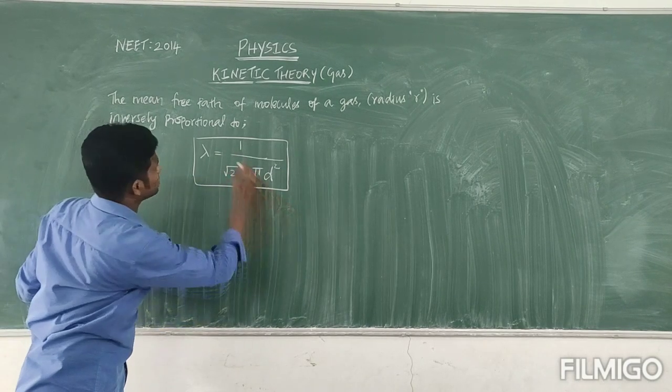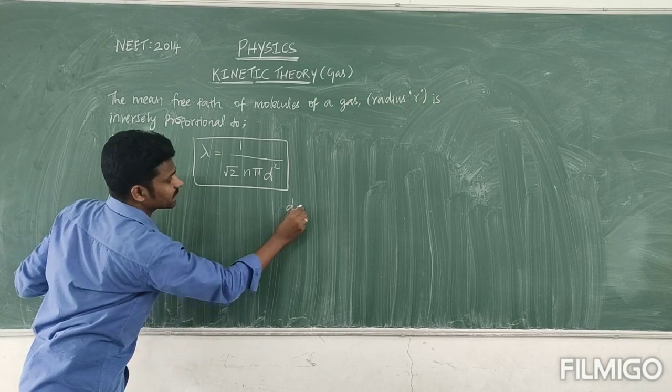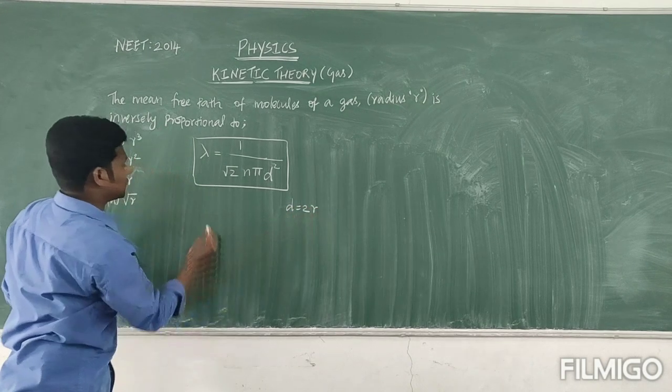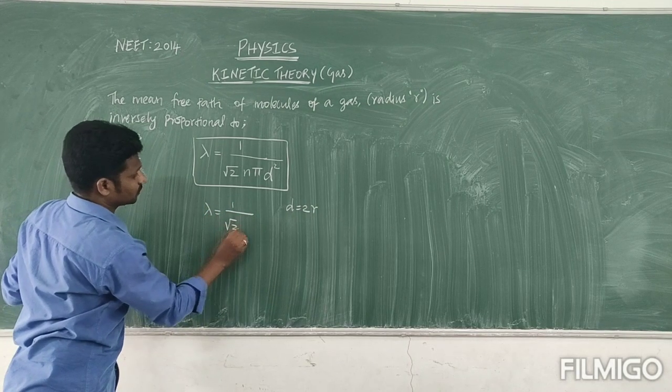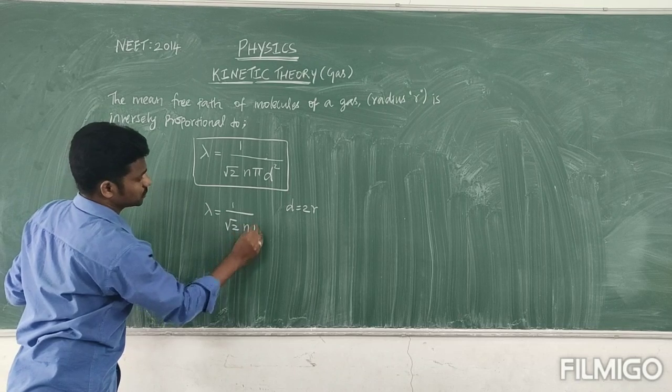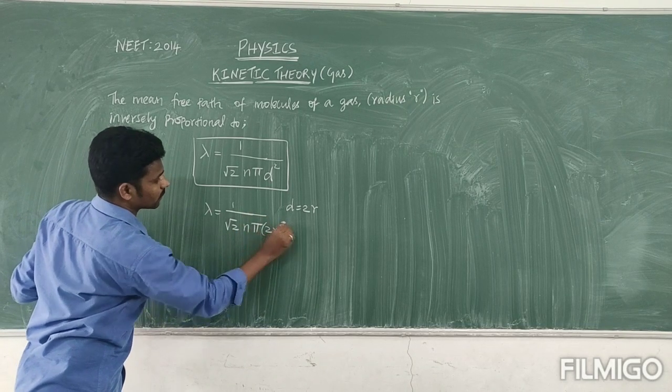So here they said in terms of radius, so we can write diameter is equal to 2 times of radius. Therefore, lambda is equal to 1 divided by root 2 n into pi into 2R the whole square.